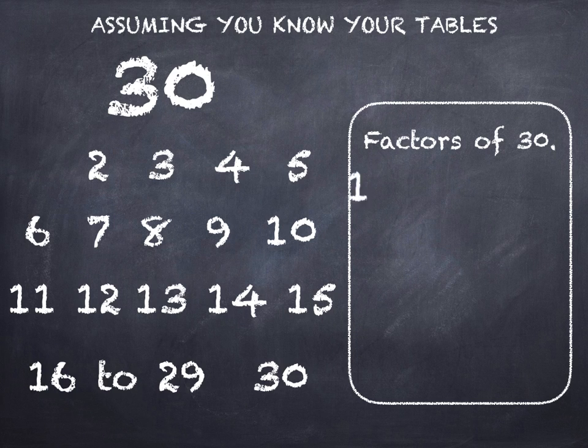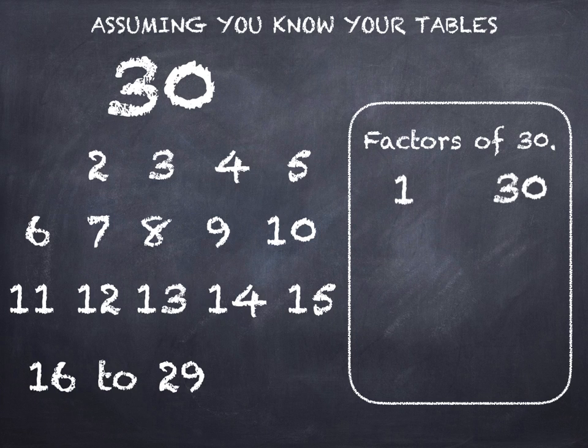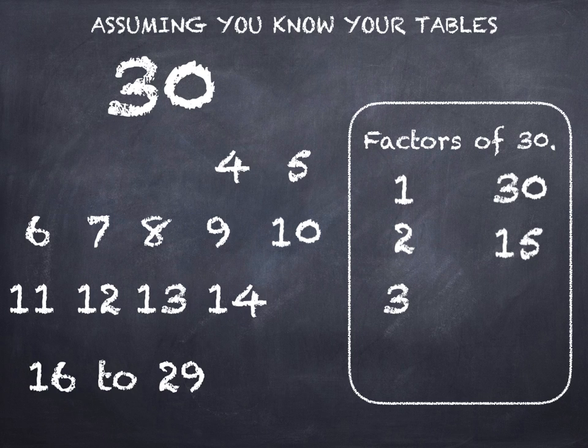So pairs of factors. 1 times 30, they're both factors of 30. 2 times 15 is 30, so they're both factors of 30.